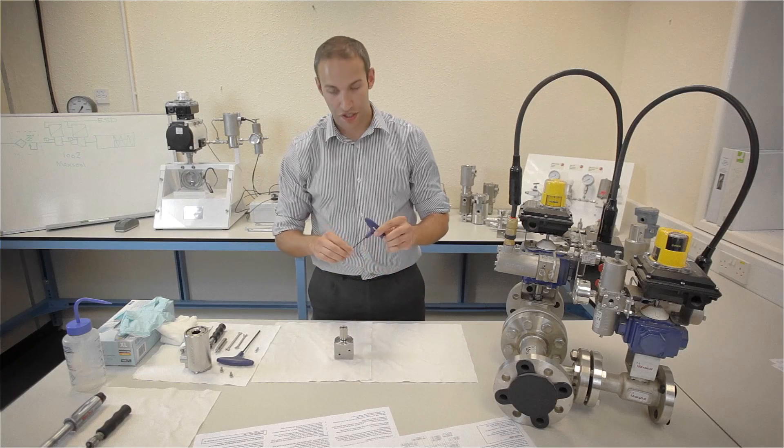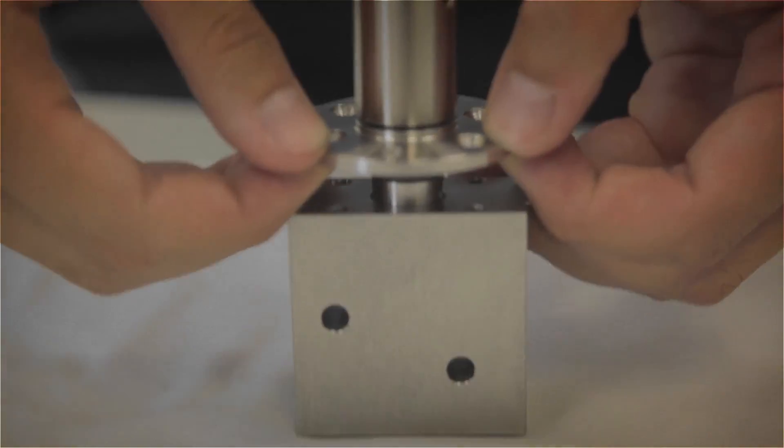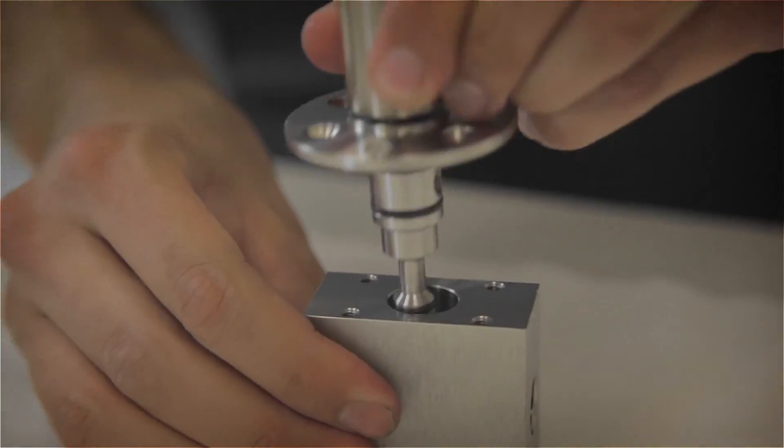We take a 2.5mm hex key and unscrew the four countersunk screws. Having removed your countersunk screws, it's now time to remove the valve body from the poppet assembly.